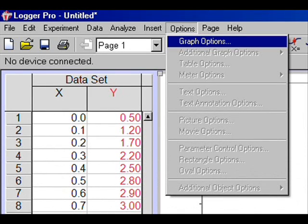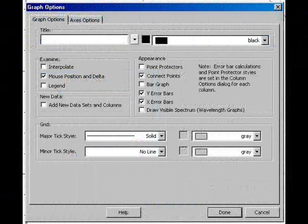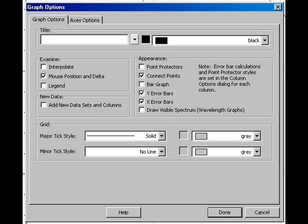Go to the Options menu and select Graph Options. The menu will allow you to change many things about your graph. For now, uncheck the box by Connect Points to remove the Connect the Dots feature.